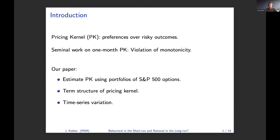So what do we do in our paper? We estimate this pricing kernel from S&P 500 options, but we won't do this just for one-month options. We actually move beyond this and also estimate the pricing kernel from two-month, three-month options, and so on. This will allow us to look at the term structure of the pricing kernel. Moreover, we will also analyze time series variation in this object.